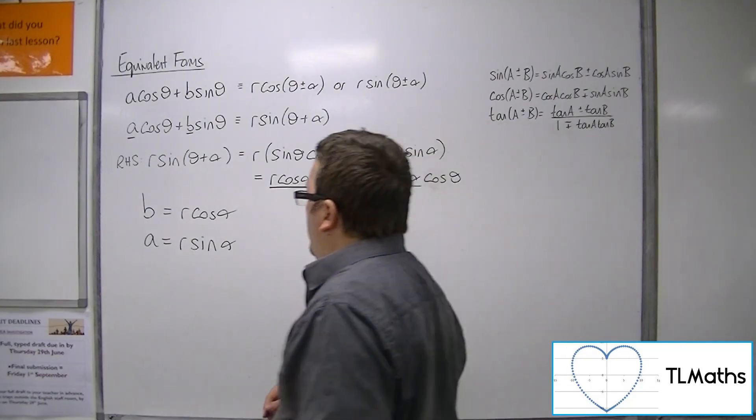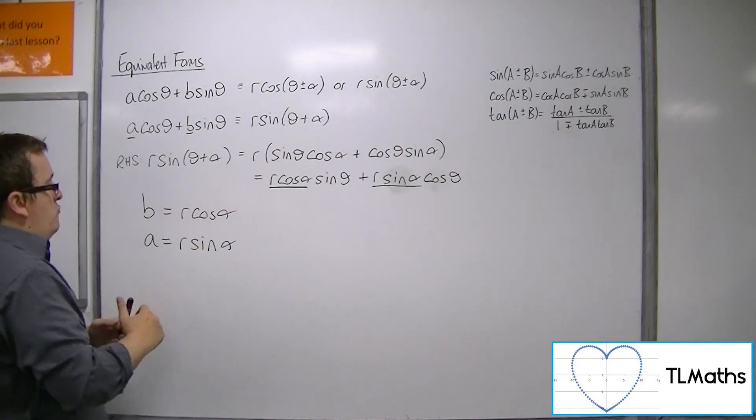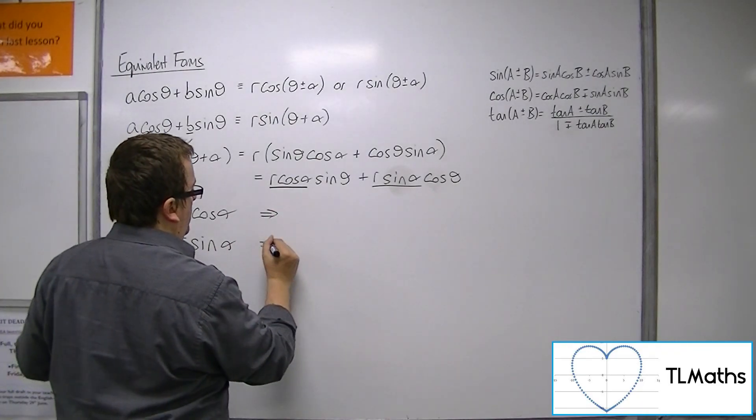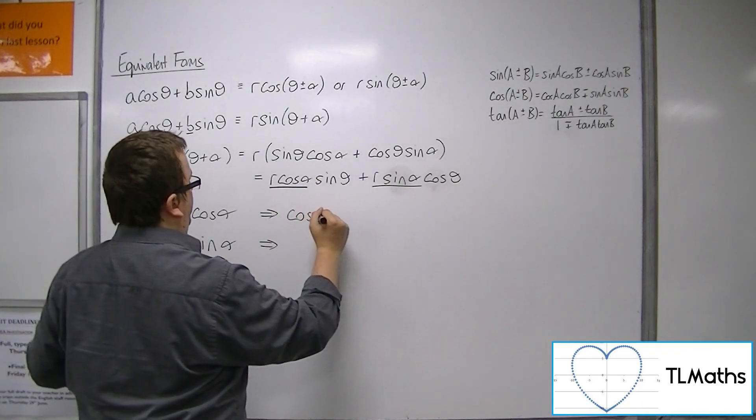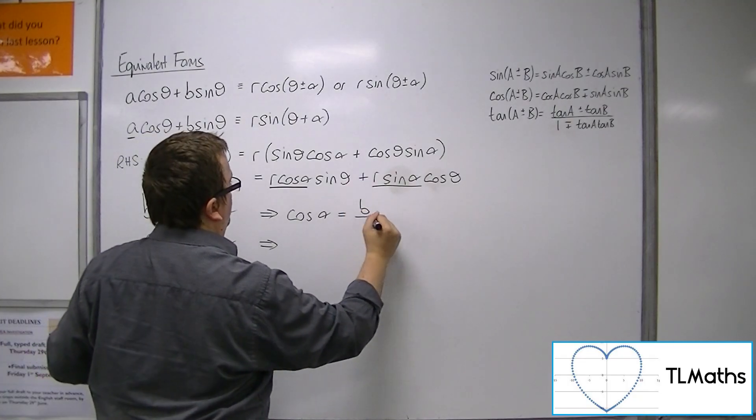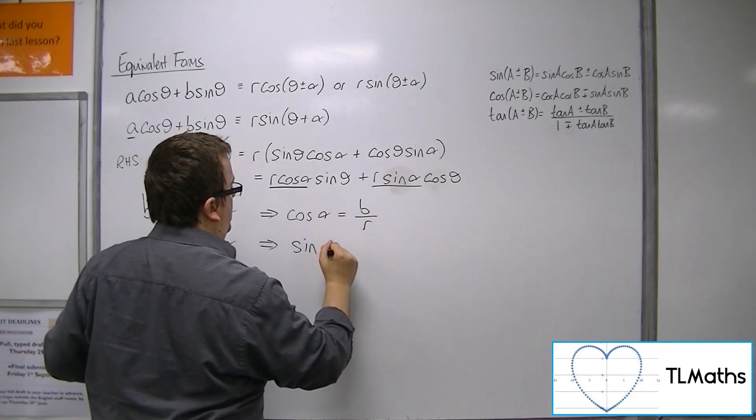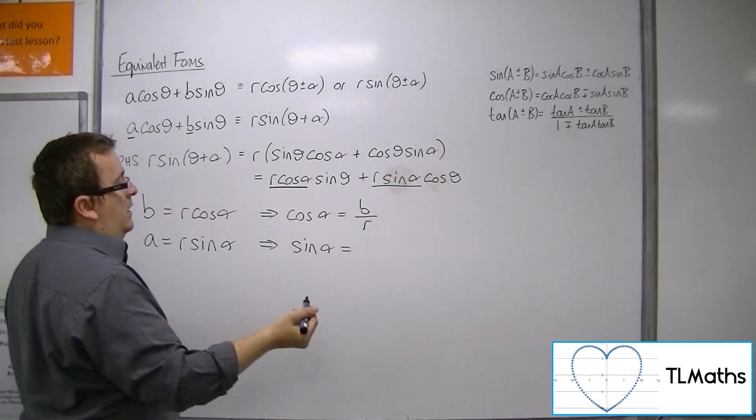So now what you can do is you could rearrange both of these to get cos alpha is b over r and sine alpha is a over r.